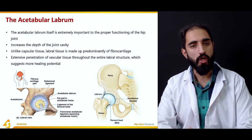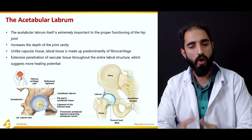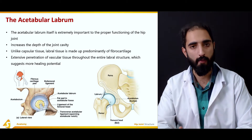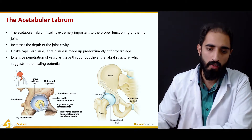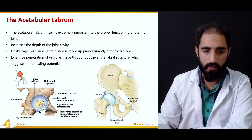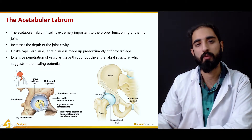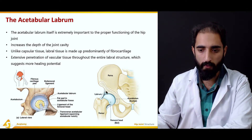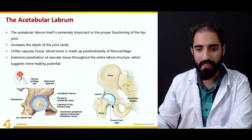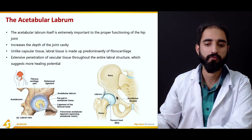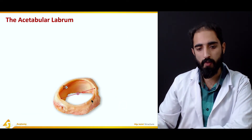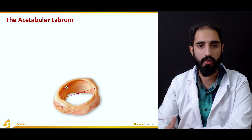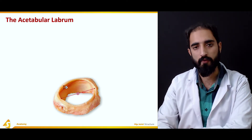Extensive penetration of vascular tissue and blood vessels throughout the anterior acetabular labral structure suggests there is a greater healing potential in the acetabulum, which is a good thing. As you can see here, the acetabular labrum surrounds the rim of the acetabulum and deepens the socket. The normal acetabulum is further deepened by the acetabular labrum, which is attached to the rim of the acetabulum, providing stability and deepening the socket to receive the femoral head.